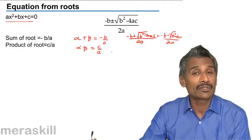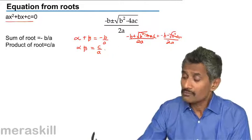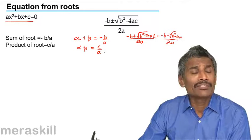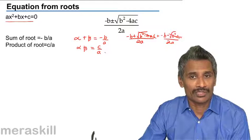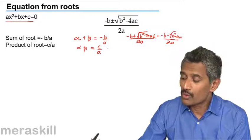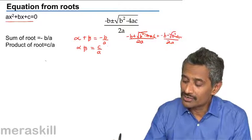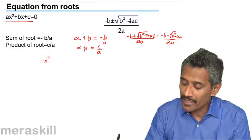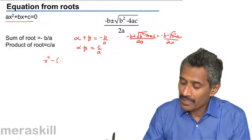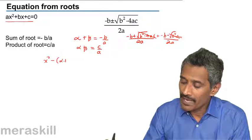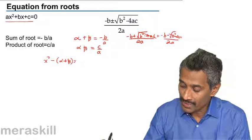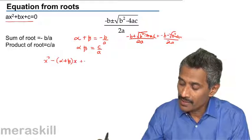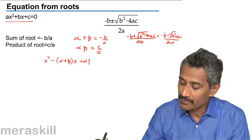Once you have the roots, how can you find the equation? A quadratic equation will always be x squared minus (alpha plus beta) times x plus alpha times beta equals 0.